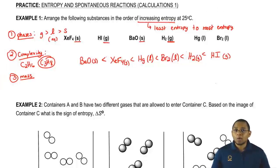Hopefully you guys were able to follow along with these three criteria. So just remember, look at phase first, then look at complexity, and if that all fails, look at mass. The greater the mass, the greater the entropy. Now that we've seen this example, let's move on to example two.